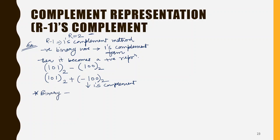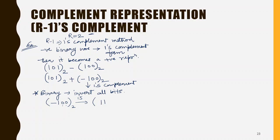For binary, the rule is: invert all bits. It means each bit is flipped individually. So if I want to convert minus 100 binary into its 1's complement, I invert all bits: 0 becomes 1, 0 becomes 1, and 1 becomes 0. So 011 in binary is the 1's complement representation of minus 100. The general rule for binary is simply to invert all the bits.